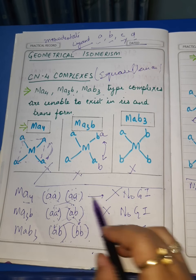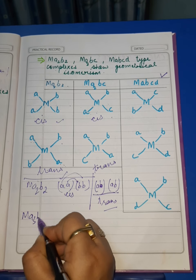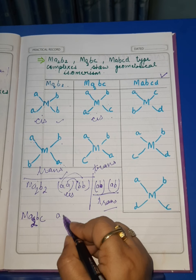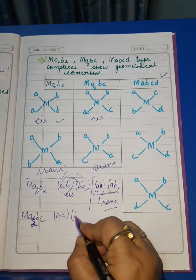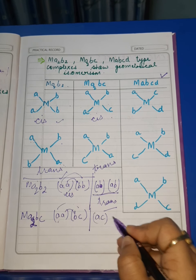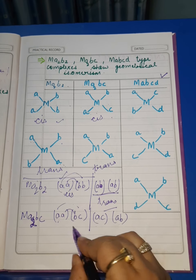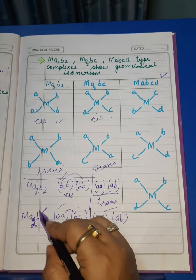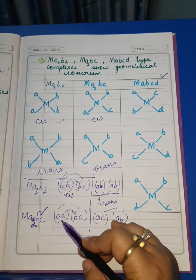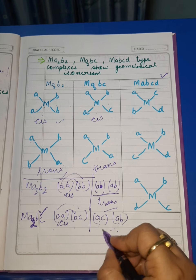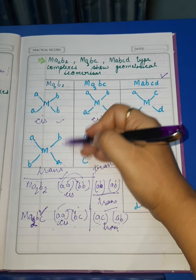For MA2BC, the first pair is AA and the second pair is BC. On exchanging ligands, we get pairs AC and AB, which gives a different geometry — confirming that MA2BC can show geometrical isomerism. When AA is on the same side, this is cis; when A ligands come on different positions, this becomes trans, as seen in the drawn structures.